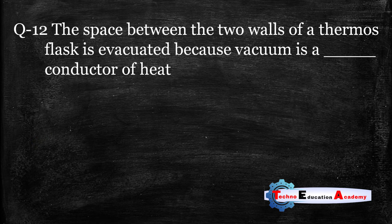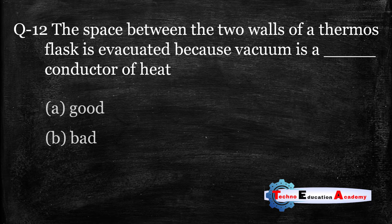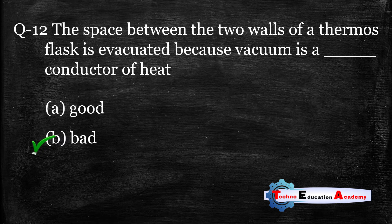Question number twelve: the space between the two walls of a thermos flask is evacuated because vacuum is a bad conductor of heat. For conduction and convection, a medium is required to transfer heat, but in a vacuum only radiation takes place. So the space is evacuated to maintain the temperature of hot or cold fluid for a long time.